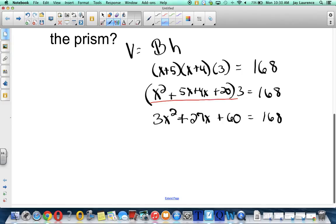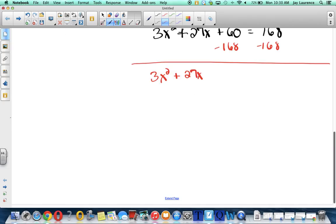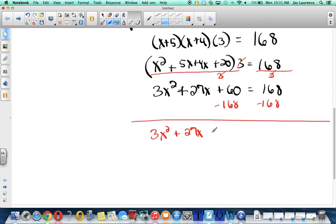what about if I just divide both sides by three right here? I could have done that because 168 is divisible by three. I didn't see it, so I'm going to do it this way. Now, to solve this, I need it equal to zero, right? So I'm going to subtract 168 from both sides. Okay, so I'm going to get a 3x squared plus a 27x. You're wondering where that 27 came from. 5 plus 4 is 9. So it would be 9x. And 9x times 3 is 27.